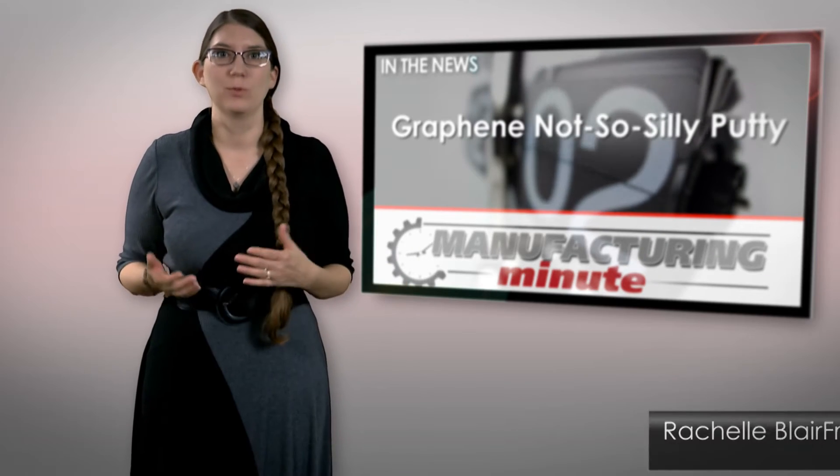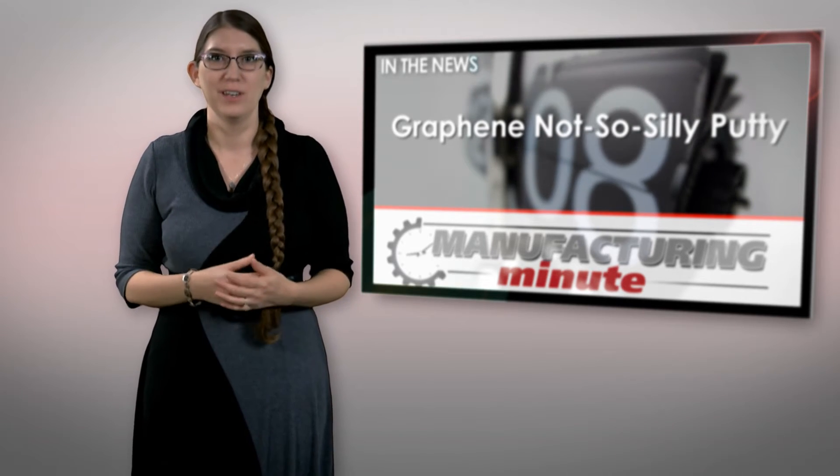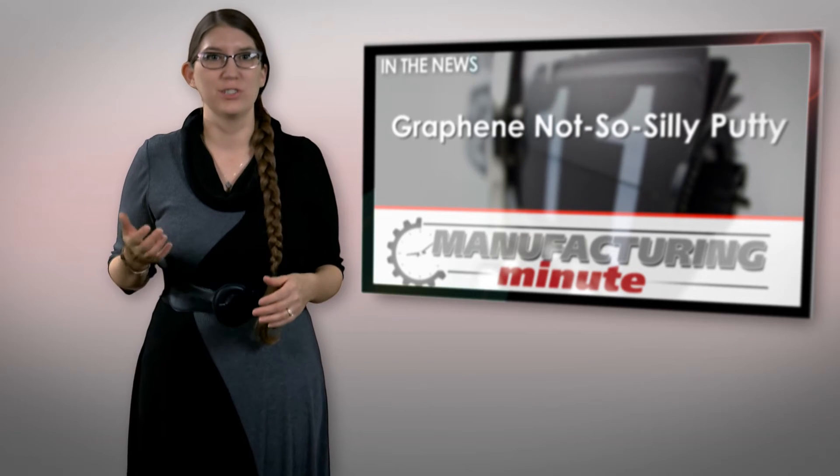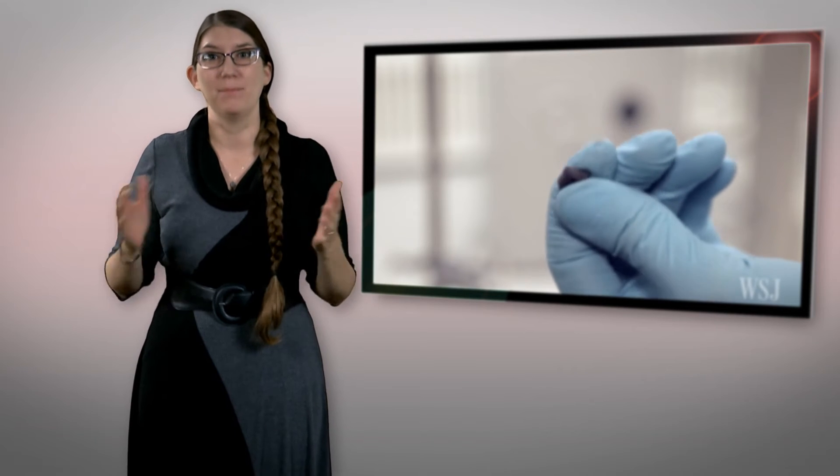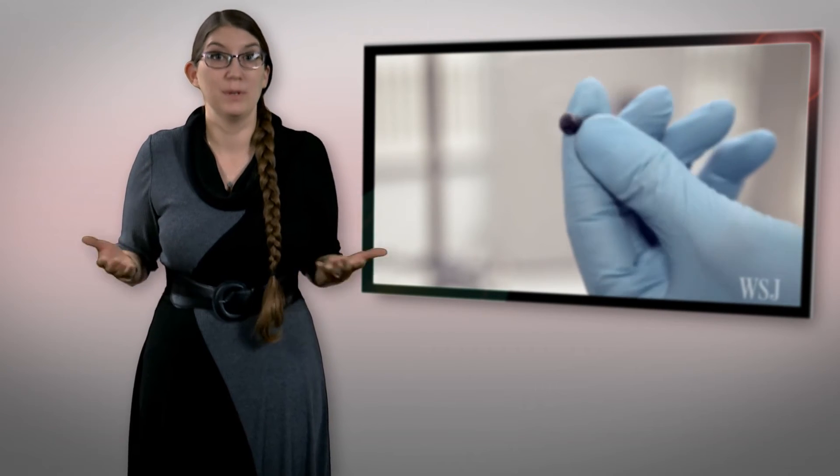On one hand, you have graphene, the world's strongest material, chemically stable and electronically conductive. In the other hand is silly putty, a stretchable, flexible, bouncy substance any elementary school kid is familiar with. But who knew that by combining these two, sensors capable of unprecedented sensitivity would be the result?